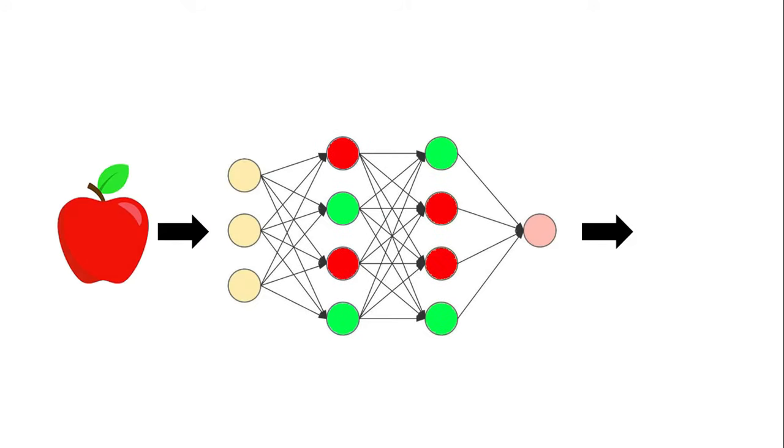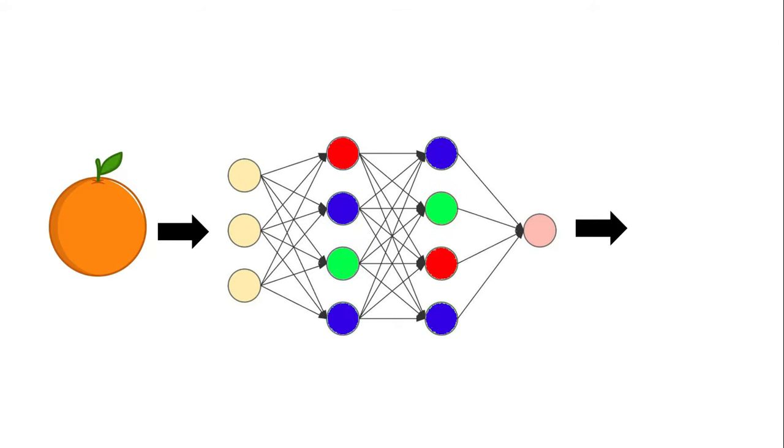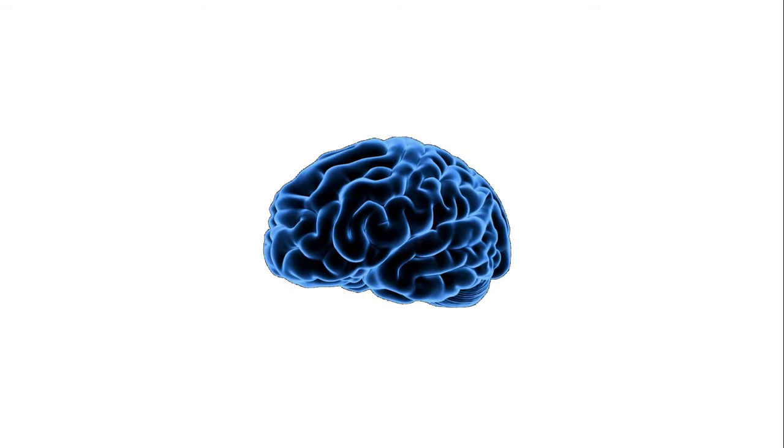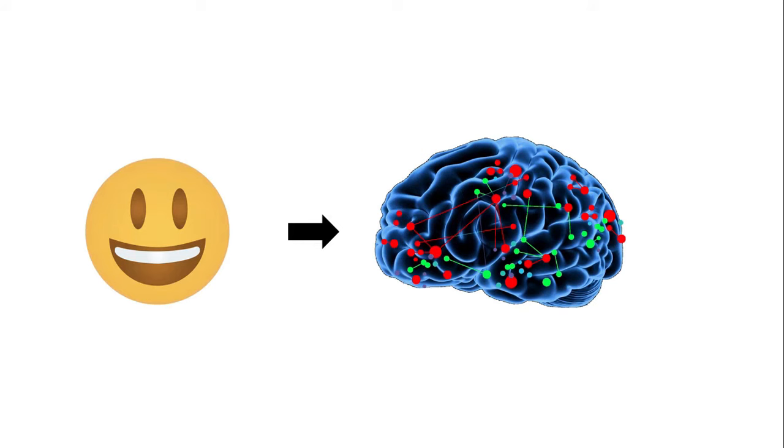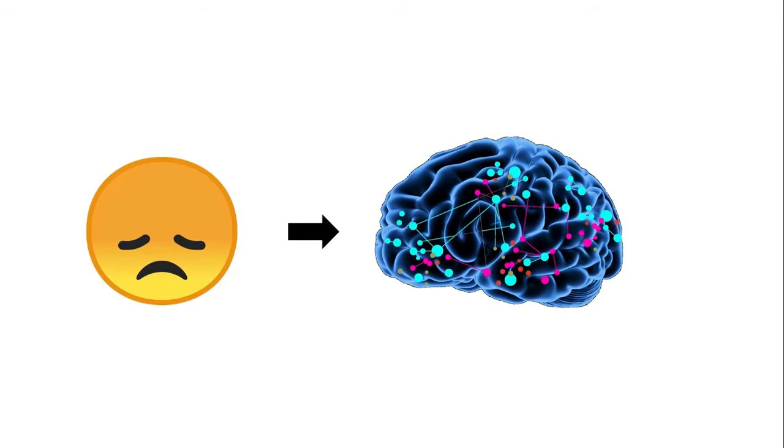When we feed an image of an apple, some neurons get activated and when we feed an image of an orange, some other neurons will get activated. It's similar to what happens inside a human brain. When we see something that we like, some neurons get activated and when we see something that we don't like, some other neurons get activated.